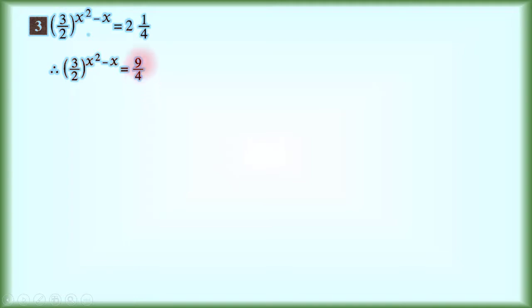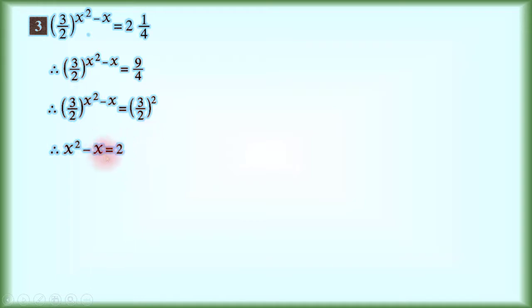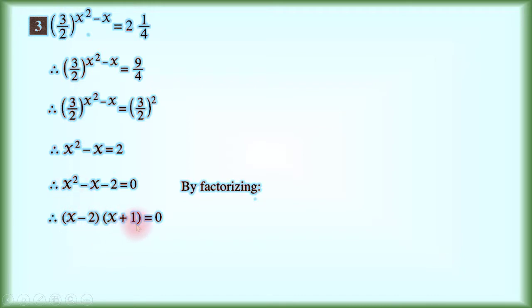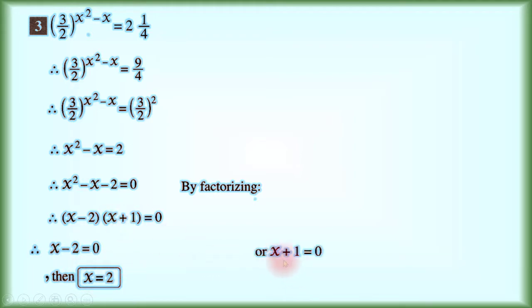Number 3: (3 over 2) power (x squared minus x) equals 2 and 1 over 4. We convert the mixed fraction to an improper fraction: 9 over 4. Since 9 is 3 power 2 and 4 is 2 power 2, we get 9 over 4 equals (3 over 2) power 2. Because the base equals the base, the powers are equal: x squared minus x equals 2. Rearranging: x squared minus x minus 2 equals 0. By factorization this trinomial factors into (x minus 2)(x plus 1) equals 0. Therefore x minus 2 equals 0 giving x equals 2, or x plus 1 equals 0 giving x equals negative 1. The solution set is {2, negative 1}.